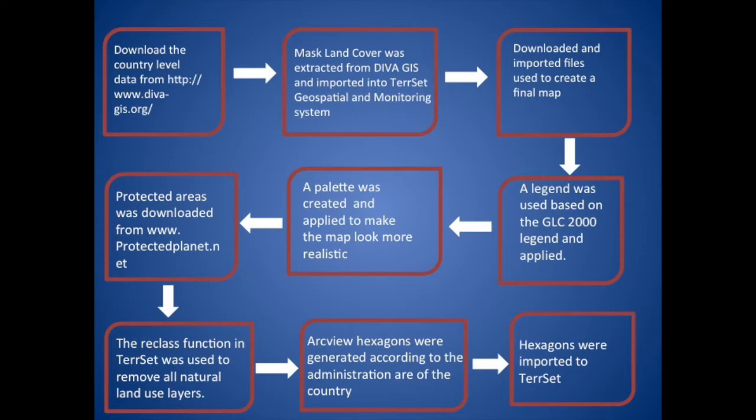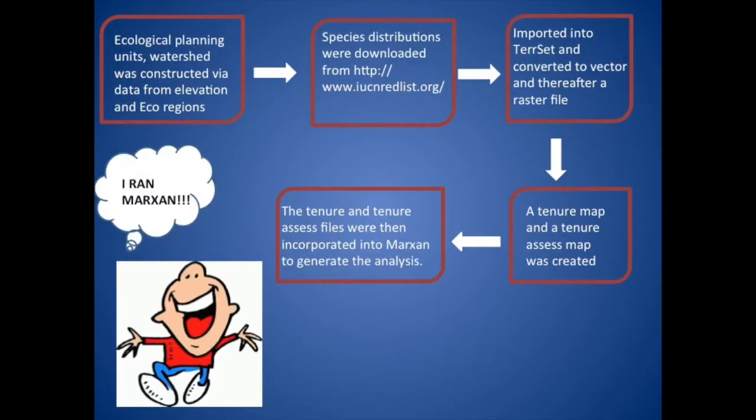In order to make the maps look more colorful and realistic, several palette files were created. Once that was completed, the country's protected areas were downloaded from www.protectedplanet.net. The reclass function was then used to remove all natural land use layers. Once that was done, hexagons from ArcView GIS were used to generate planning units according to the administration of the country.